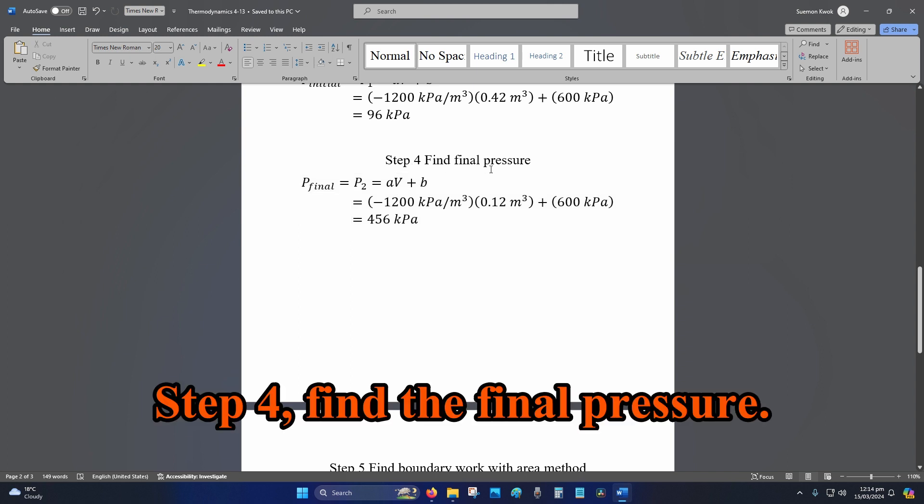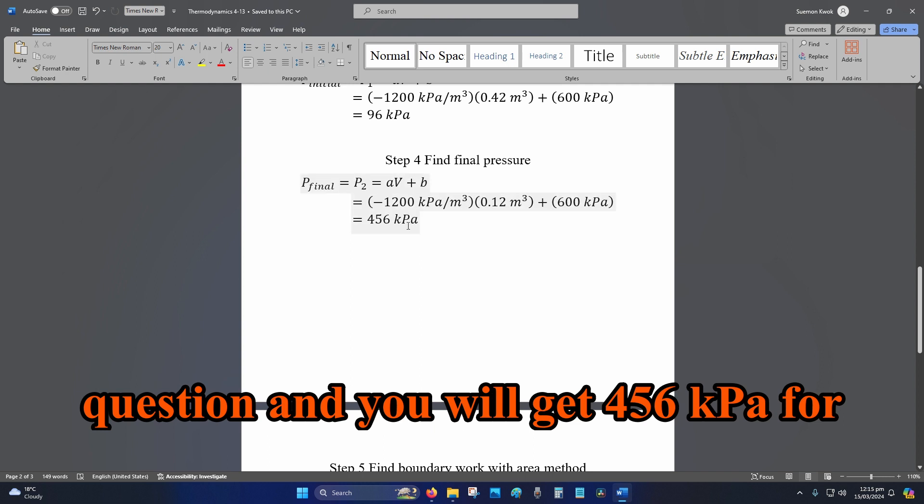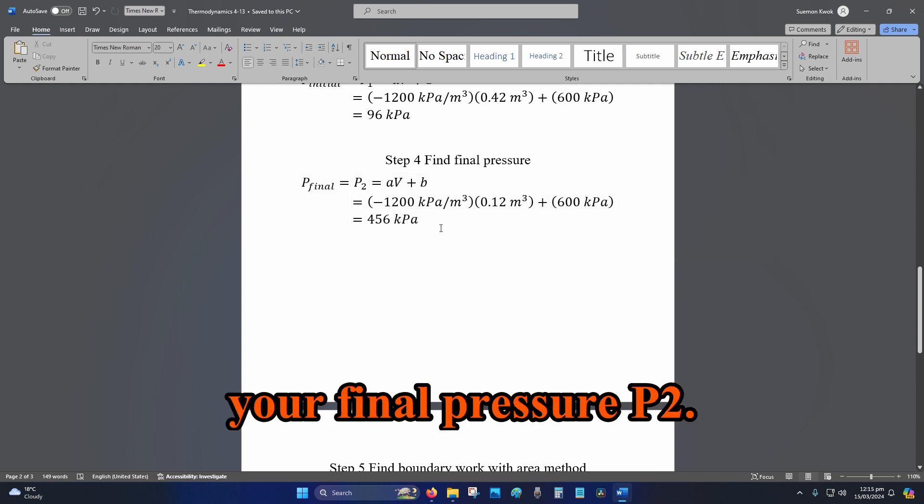Step 4, find the final pressure. Once again, plug in the values from the question and you will get 456 kPa for your final pressure, P2.